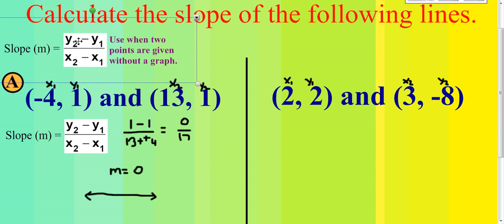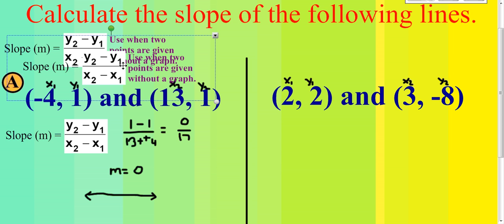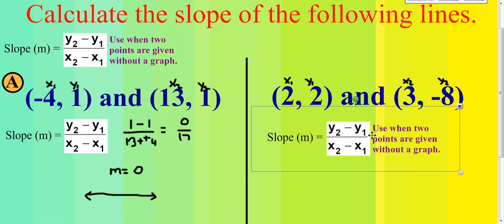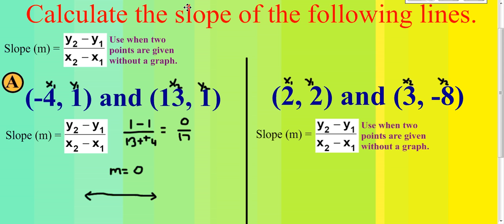We're going to use the same formula — when two points are given without a graph, we substitute what we've labeled into the formula. So m, which is slope, equals y2 minus y1 over x2 minus x1. y2 is negative 8, minus y1 which is 2.